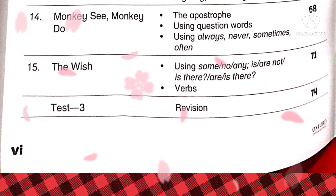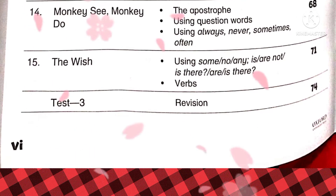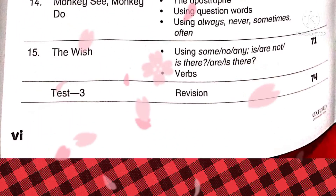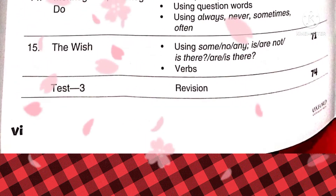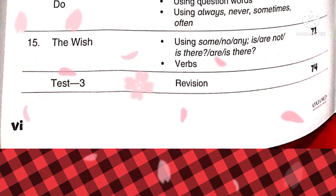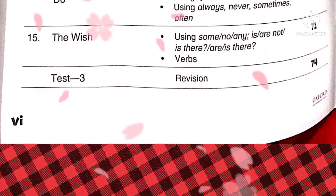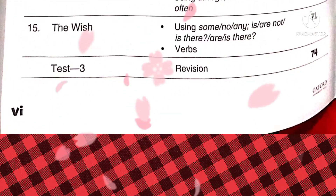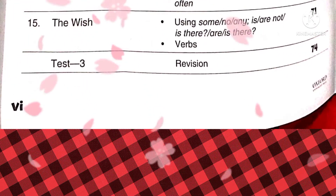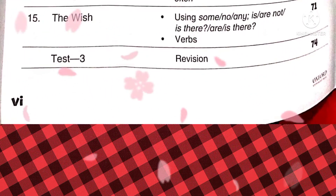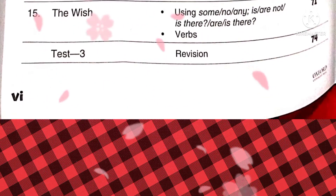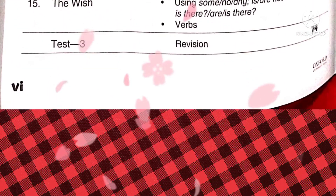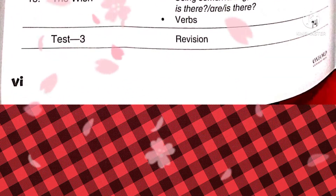The last chapter is number fifteen, 'The Wish.' We will learn using 'some,' 'no,' 'any,' 'is,' 'are not,' 'is there,' 'are,' and verbs. This is followed by Test 3, which is the final revision section.